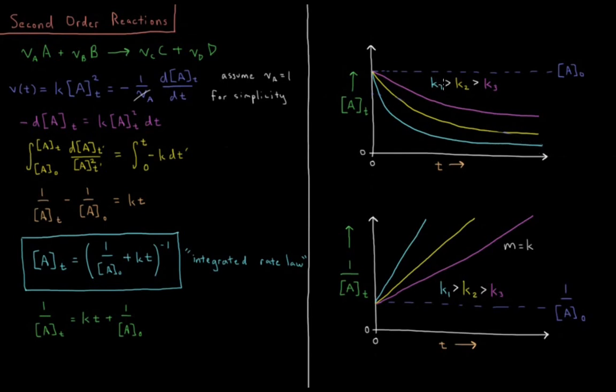So if we have a fast rate constant, it occurs much more quickly. A lower rate constant means the same decay, but on a slower timescale, and as the rate gets slower, it's slower and slower in that decay still.